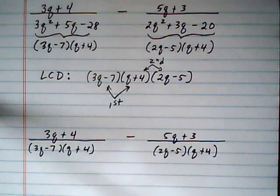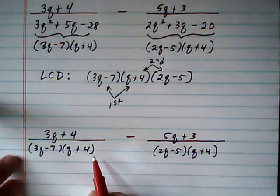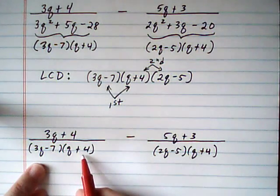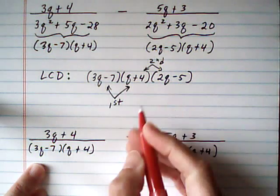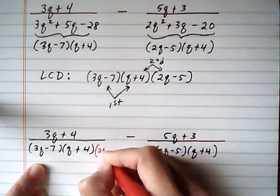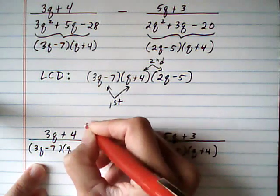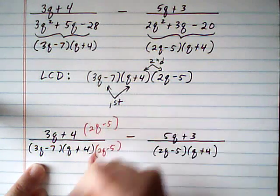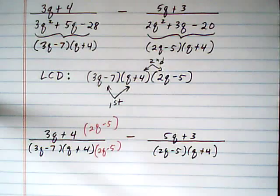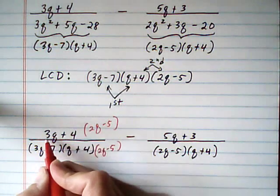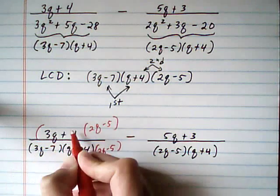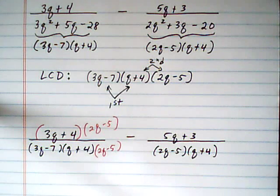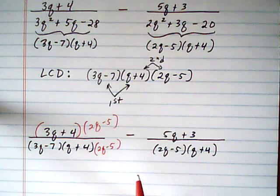And now what we're going to do is multiply any missing factor to make the LCD. 3q minus 7, q plus 4 is missing 2q minus 5. So that means 2q minus 5 gets multiplied top and bottom. And it's really important here that it's multiplying the entire numerator. It's not just multiplying the 4. So you've got to put parentheses around it, and that's going to remind you to distribute when you're simplifying the numerator later.